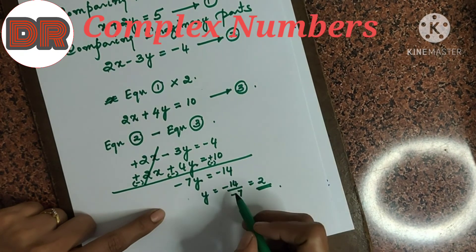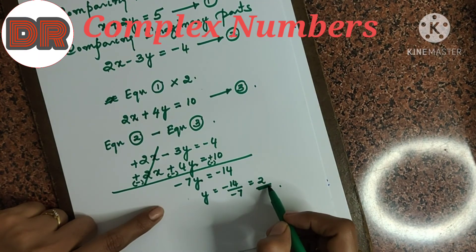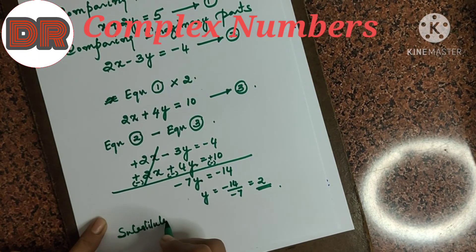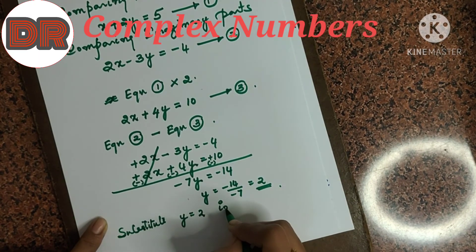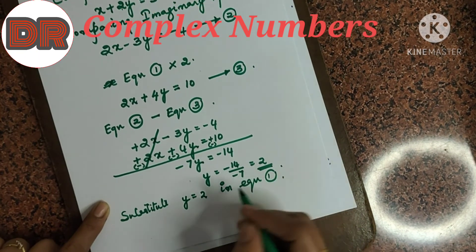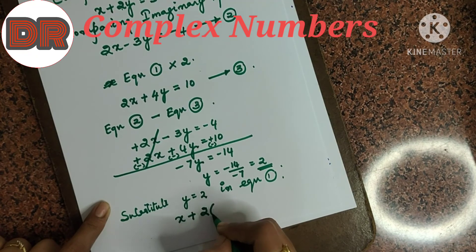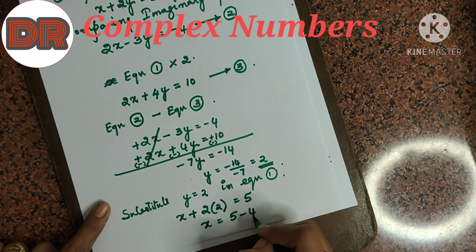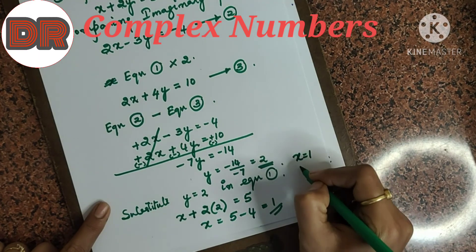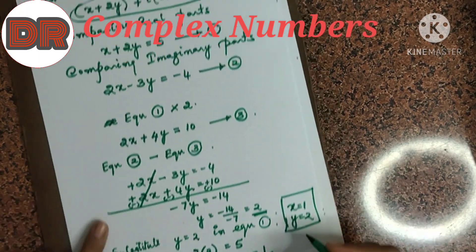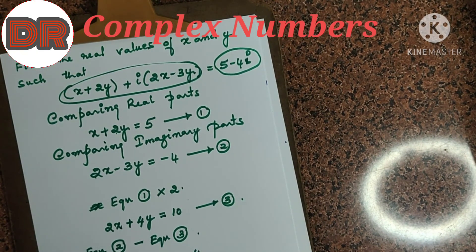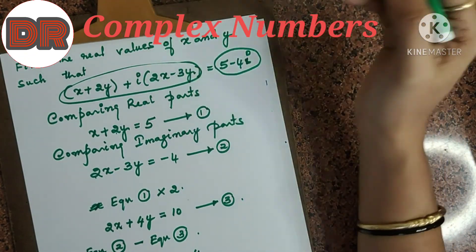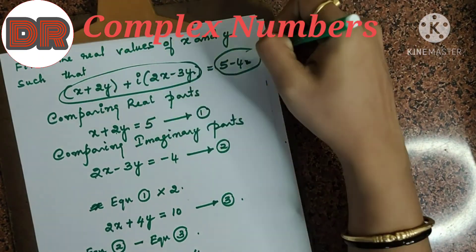We have found y equals 2. To get x, substitute y equals 2 into equation 1: x plus 2 times 2 equals 5, so x plus 4 equals 5, giving x equals 1. So x equals 1 and y equals 2. This is the solution for this example where two complex numbers are given as equal.